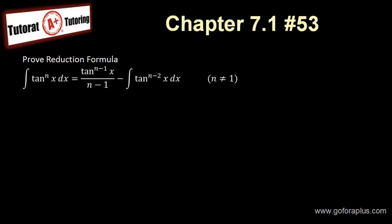So as you know, for a reduction formula we need to use integration by parts. But before doing that, I have to transform this tangent into something else using secant squared. I have to extract two of the tangent — tangent squared into secant squared minus 1. So let's see how we do this.